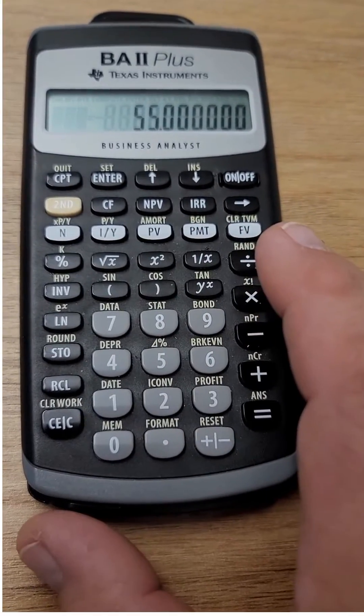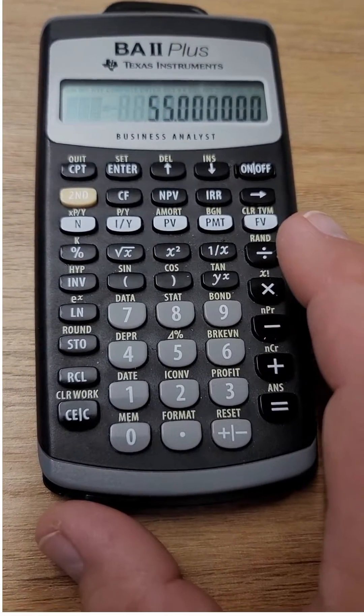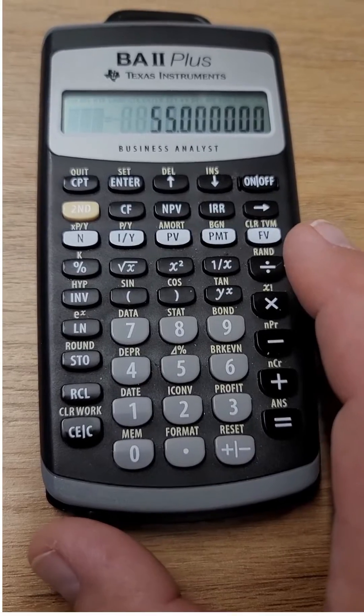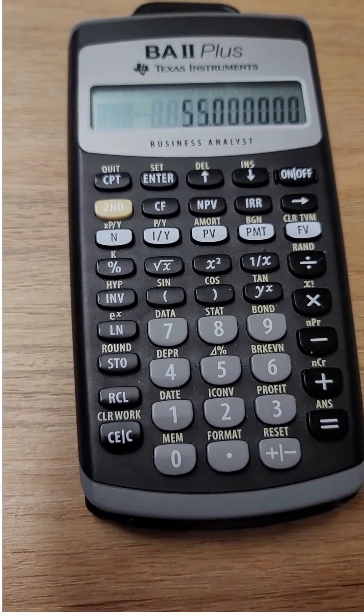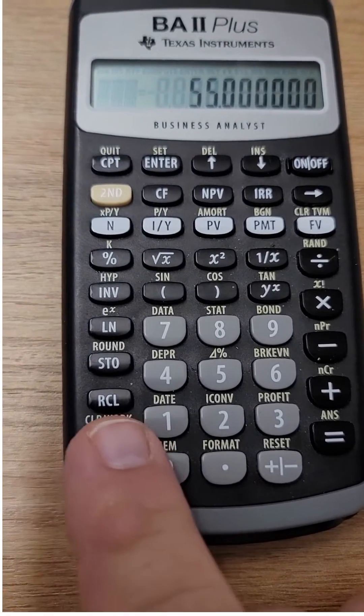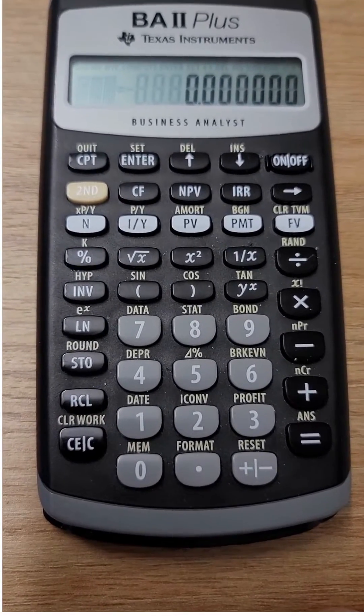Your Texas Instruments BA-2 Plus keeps giving you the wrong answer. Professor Capco, I'm going to show you what the likely reason is that you keep getting the wrong answer. They just hit the clear button when they're done with the last calculation.